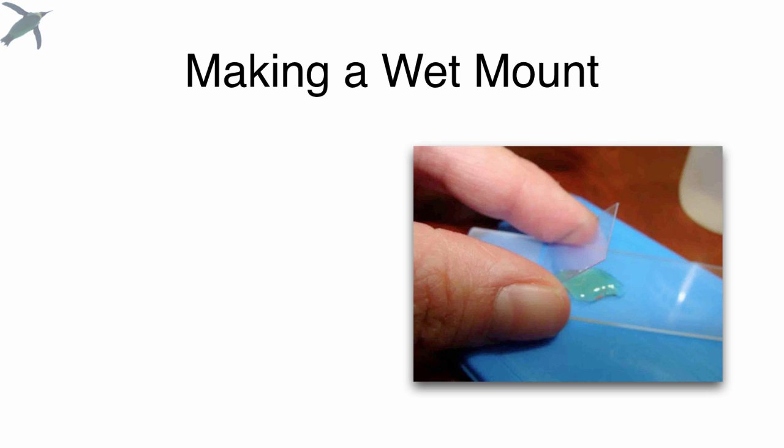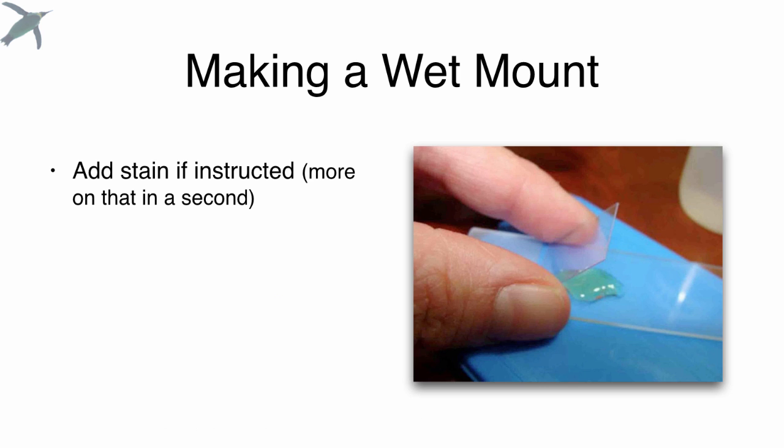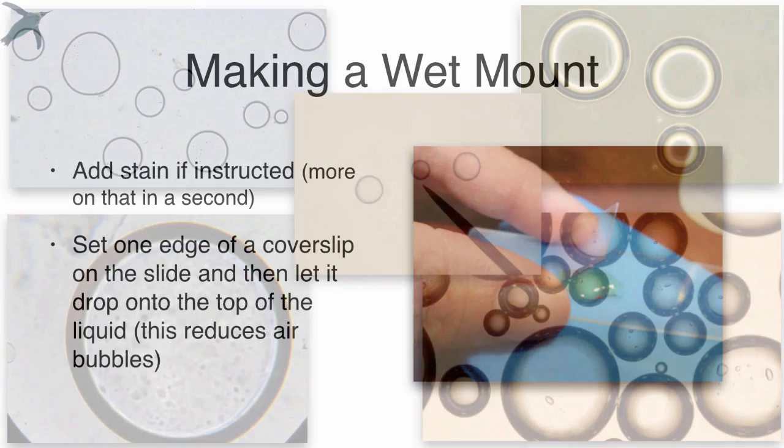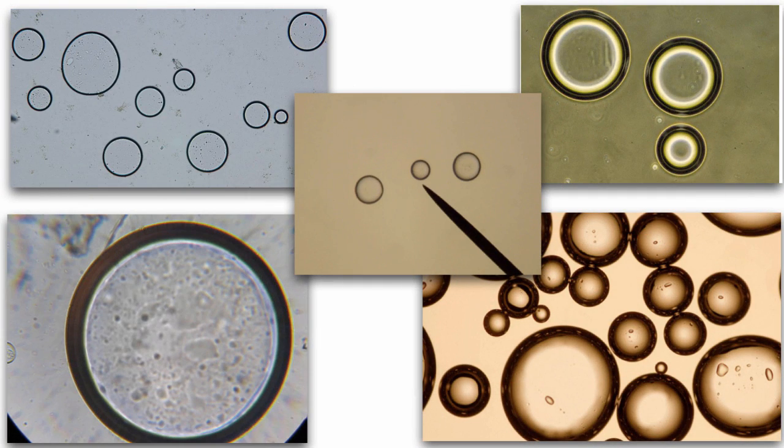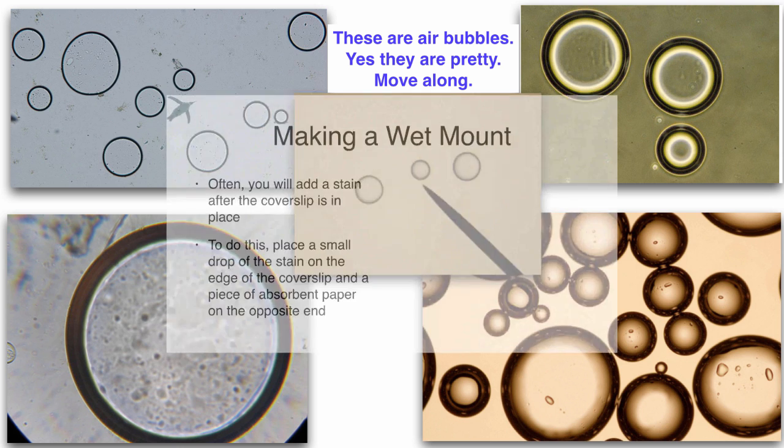Next you're going to grab a cover slip, which is a little square piece of plastic, and add a stain if you're told to do so. But most people add the stain after the cover slip is already in place. Then you're going to set one edge of the cover slip at about a 45 degree angle, and then slowly let it drop. This technique will reduce air bubbles. Now these are air bubbles. Many students spend many hours drawing air bubbles because they look alive, and they're very pretty. Okay guys, they're air bubbles, so just move on.